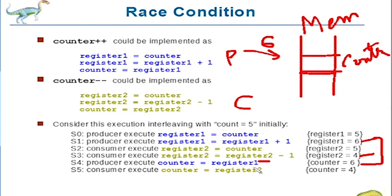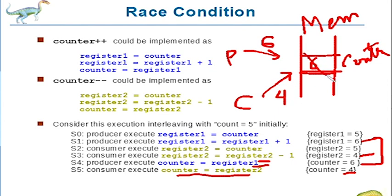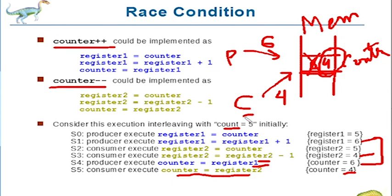By some chance, the producer process comes back into the CPU and writes its value of 6 to memory. There is only one copy of the counter variable in memory, so it now holds 6. But then the consumer process comes back and writes its value of 4, overwriting the 6. The final value of counter in memory is 4, which is a wrong value.